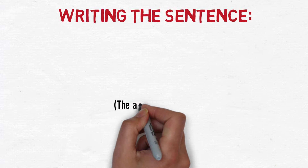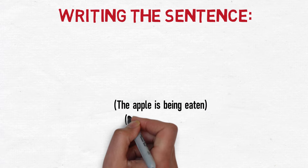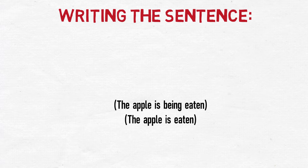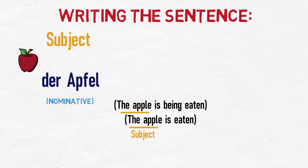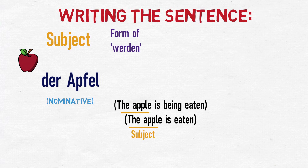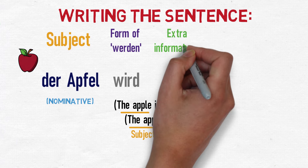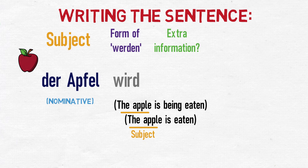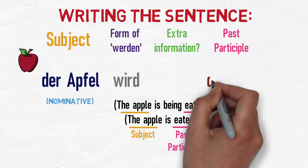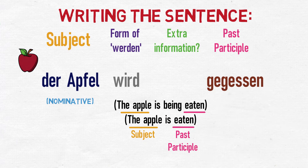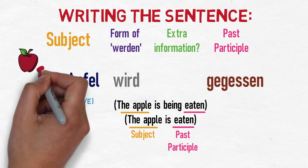So let's look at an example. The subject of this sentence is 'the apple,' which is normal for the subject of a sentence. We now need the correct form of werden in the present tense. The apple is an 'it,' so we use the 'it' form of werden, which is 'wird.' If there were any extra information in the sentence, we would put that now. In this sentence there isn't any, so we can finish off with a past participle. The past participle, which means 'eaten,' is 'gegessen.' So therefore, 'the apple is being eaten' or 'the apple is eaten' is 'Der Apfel wird gegessen.'